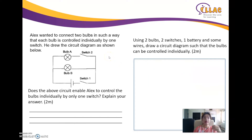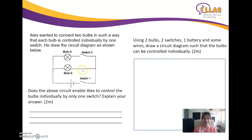Alex wanted to connect two bulbs such that each bulb is controlled individually by one switch. He drew a circuit diagram. If switch two is off, it won't be a closed circuit because switch one is still open — the only complete round has no batteries, so both bulb A and B will not light up.